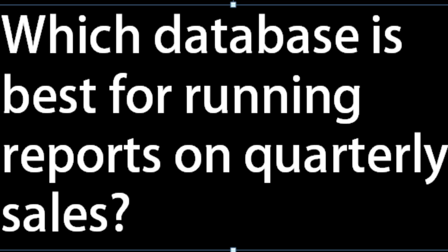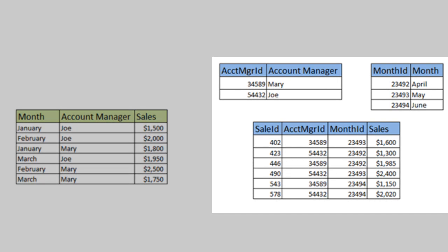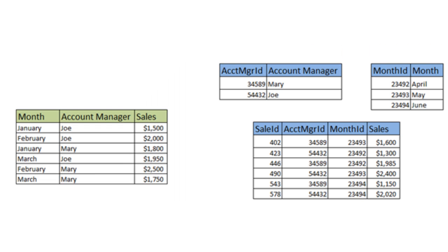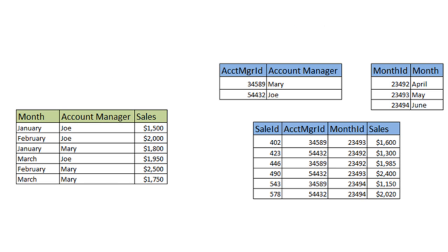So the gun's at your head — which database is best for running reports on quarterly sales? The design on the left is OLAP and the design on the right is OLTP. OLAP is optimized for reads. Hopefully you can see that if asked how much Joe sold in the first quarter, you would be able to answer much more quickly.